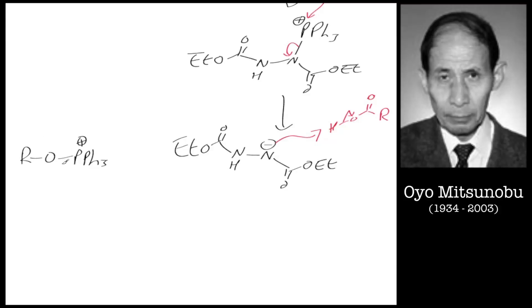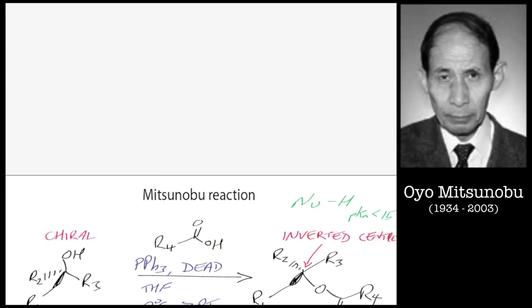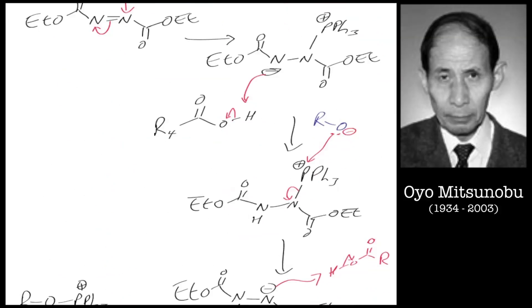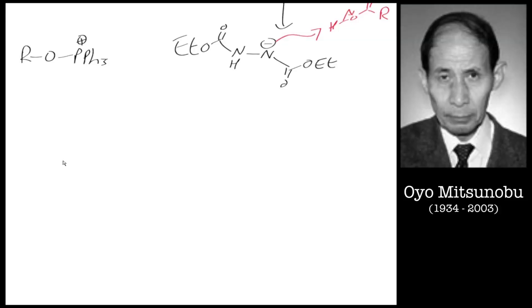Once we've got this here, this is our activated species now. I'm going to draw it back in the chiral form we had before. So I'll take this structure here which is chiral. It doesn't have to be chiral for the Mitsunobu reaction, but I'll make it chiral in this case to show the inversion. I'll put the triphenylphosphine moiety onto it with the positive charge.